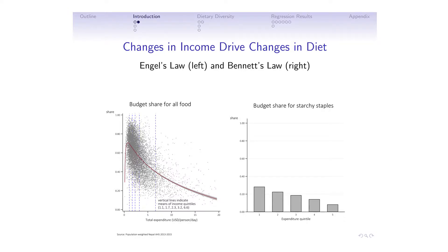On the right, I have the share of the food budget that's spent on starchy staples — basic staples. The other stylized fact we observe is that as households become better off as measured in terms of income, their budget share for starchy staples declines. That's a stylized pattern that fits with things we see worldwide. These patterns are important because, in large part, changes in income drive changes in diet. And one of the things we're interested in is understanding what other factors might drive dietary change in addition to income.